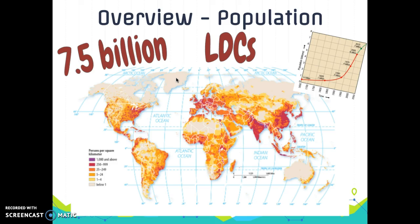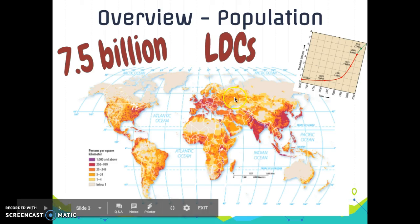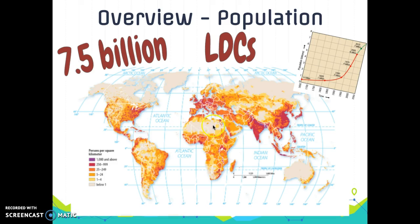Other places are very sparsely inhabited. You can see on this map that the Sahara Desert is very sparsely inhabited, as is the Siberian tundra. There are 7.5 billion people on the earth's surface today, more than any other time throughout our entire history.